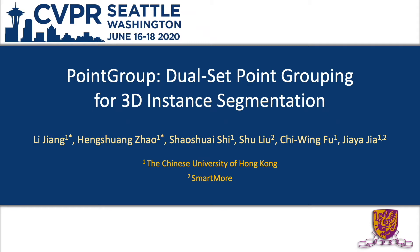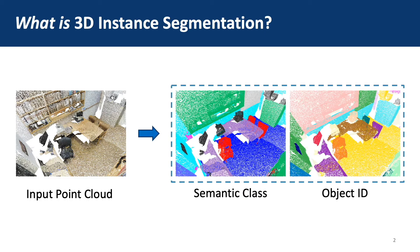Here I will introduce PointGroup, a new bottom-up method for 3D instance segmentation. 3D instance segmentation is a task to assign an instance ID to each point of the input point cloud and specify the semantic label of each instance.